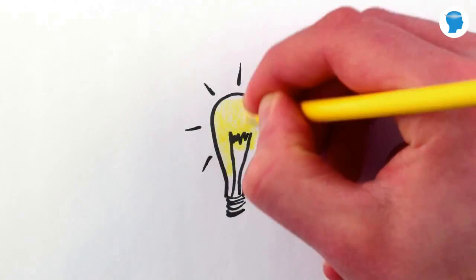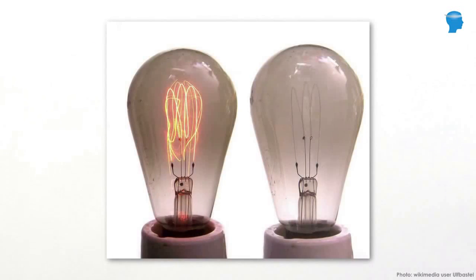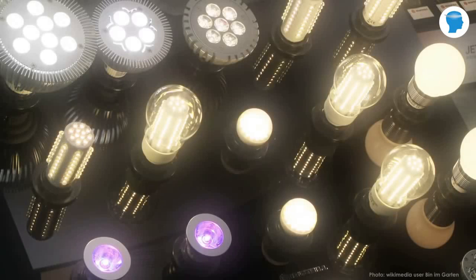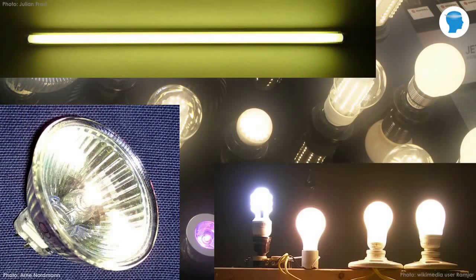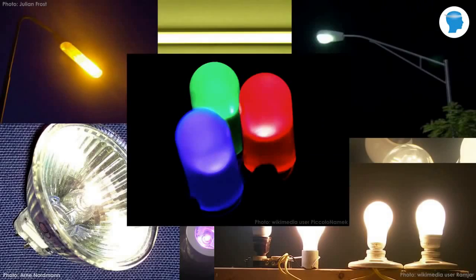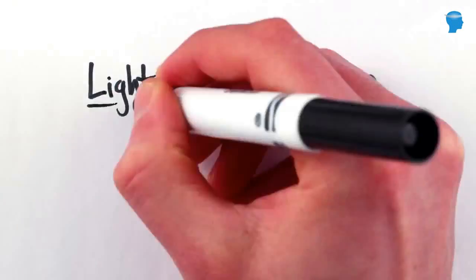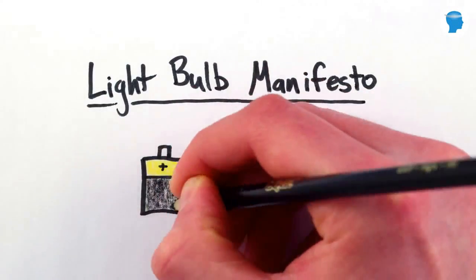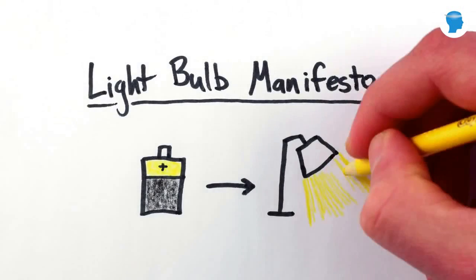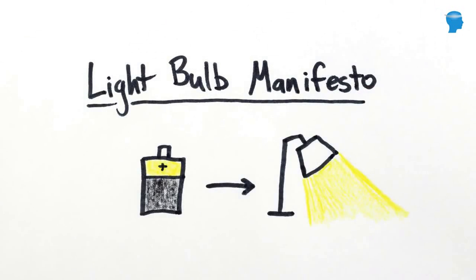So the incandescent light bulb is 19th century technology, and by now there's a blinding array of electric lamps – halogen light bulbs, fluorescents, mercury and sodium vapor lamps, LEDs, and so on. Each one makes its own clever use of physics to achieve the life goal of a light bulb, converting electrical current into visible light. Here's how they work.